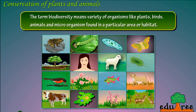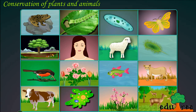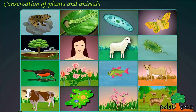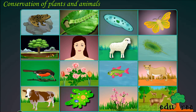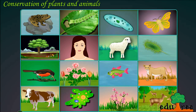What is Biodiversity? The term Biodiversity means the variety of organisms like plants, birds, animals, and microorganisms found in a particular area or habitat.